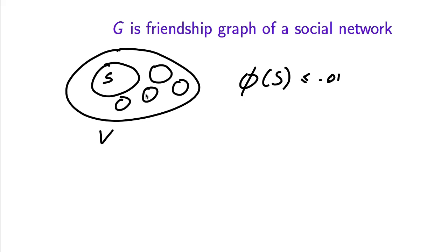To further specify what it means to find all of them, we would have to say whether, in the case of intersecting sets, we want to find each of them, find the union, or find the whole sigma algebra. But in general, suppose that there are many disjoint low conductance sets — it would be interesting to find all of them or many of them.